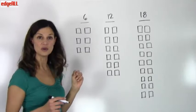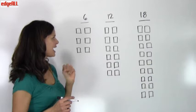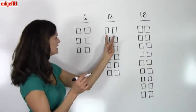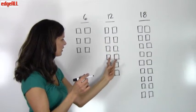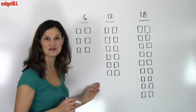If I take 12 objects and pair them up in 2s, I'll have 1, 2, 3, 4, 5, 6 pairs of 2 with none left over.